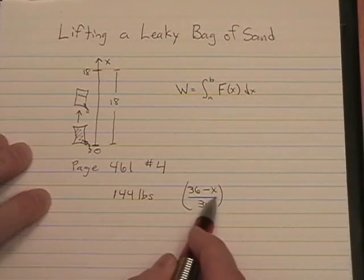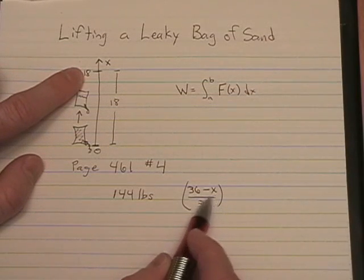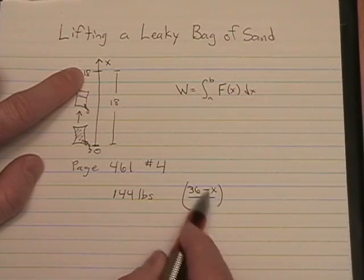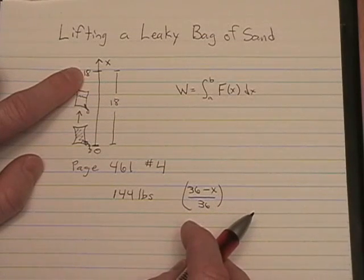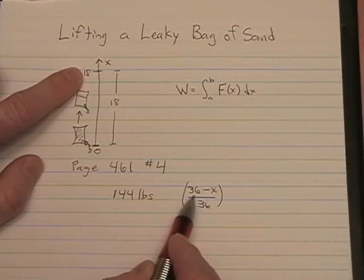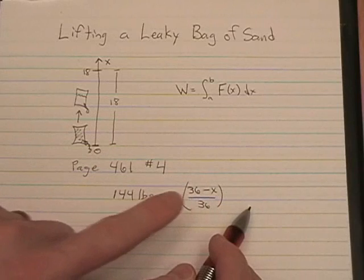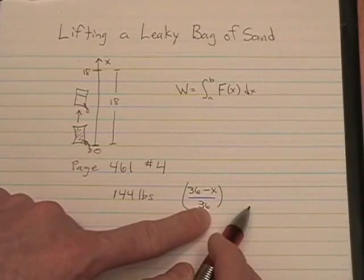For example, at 18 feet we have half the sand left. 36 minus 18 is 18. 18 over 36 is half. And if we put in 36 feet, we have 36 minus 0 over 36 which is 0. So this proportion here will tell us how much of the sand is left.